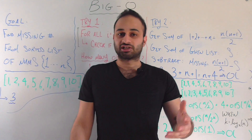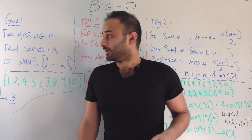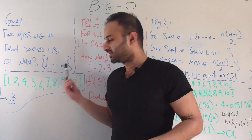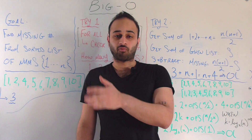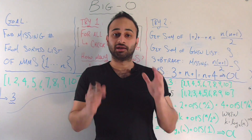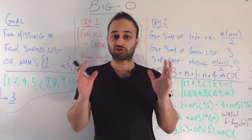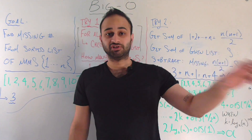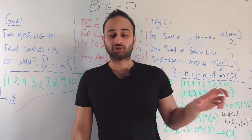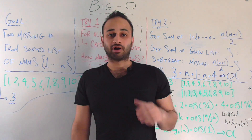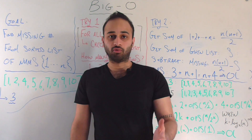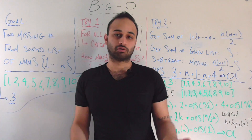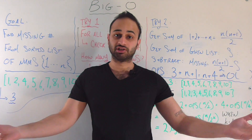Okay, so let's get started. The problem is that you have a list of numbers from one to n — every number from one to n in a sorted list. If someone removes one of these numbers and you don't know which one they removed, you need to write a piece of code to figure out which is the missing number.